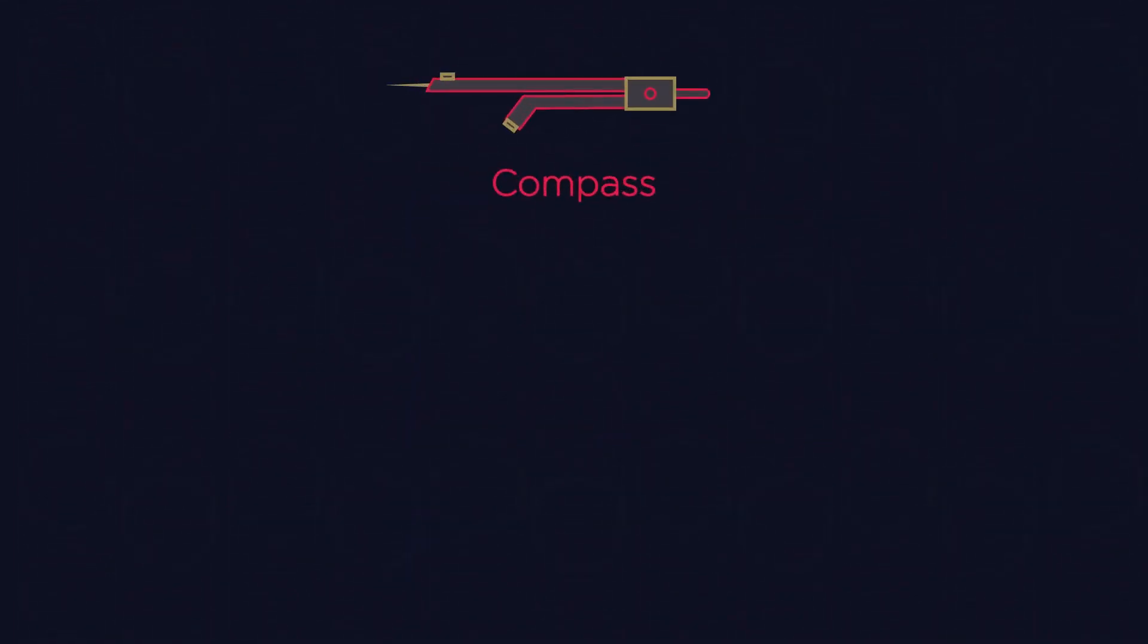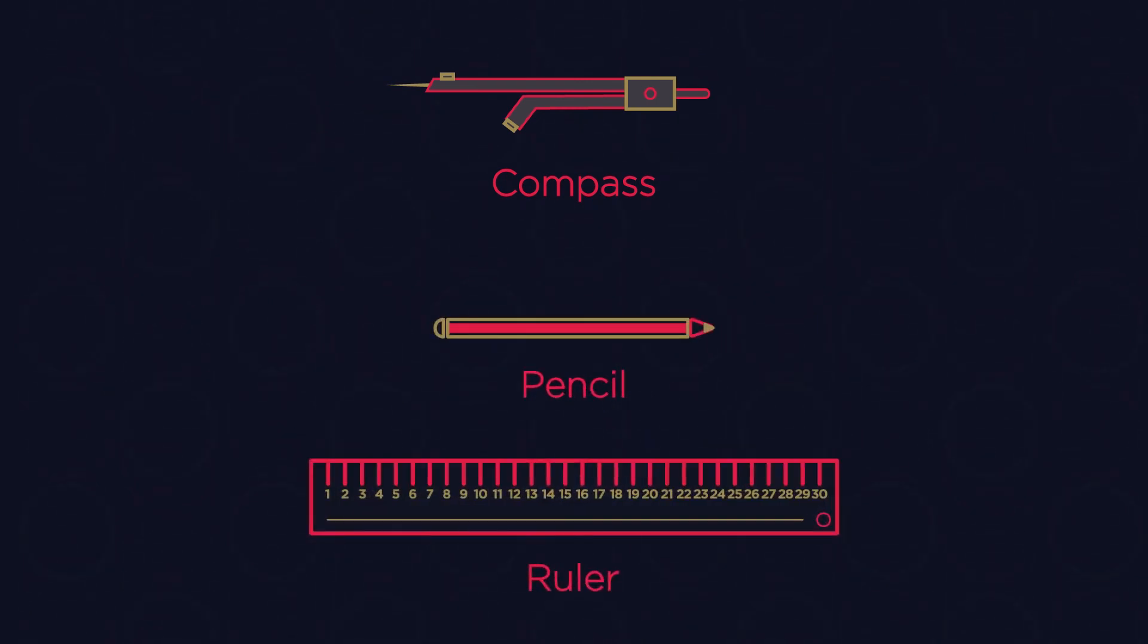Simple. So just remember, you need a compass, pencil, and a ruler, and then to draw two sets of arcs, and you have a perfect perpendicular line.